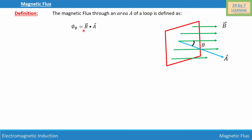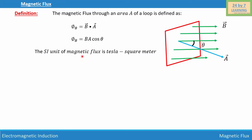If we find the dot product, we get phi B is equal to B A cosine theta, where theta is the angle between uniform magnetic field B and the area of cross section A. The SI unit of magnetic flux is tesla meter squared, or weber, and one weber is equal to one tesla meter squared.